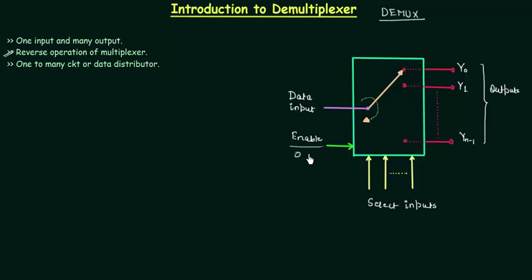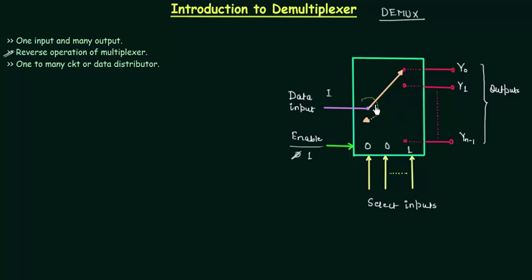If this enable is high, then our demultiplexer is operational and the data input is transferred to any of these outputs depending upon the select inputs. For example, if enable must be high and select inputs are zero zero one, and data input is i, it means this data input i must be transferred to y1.